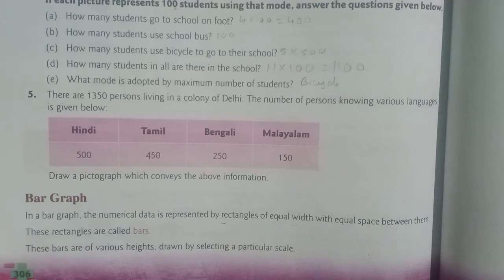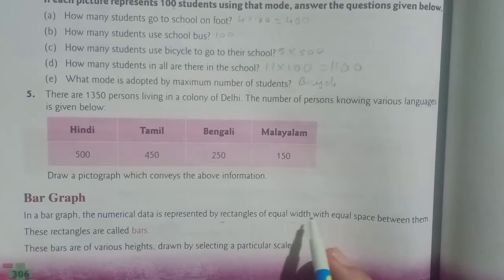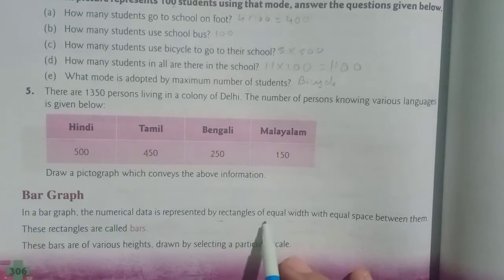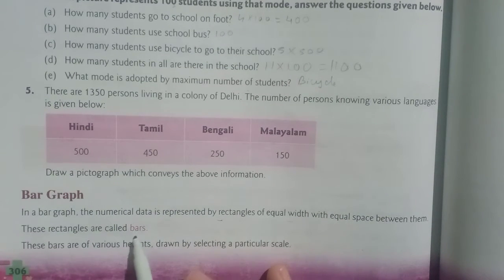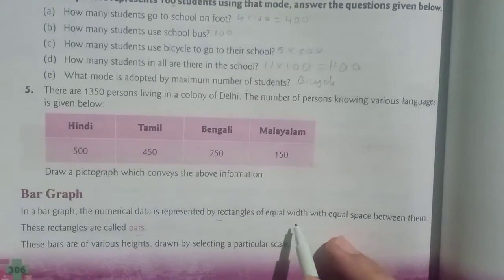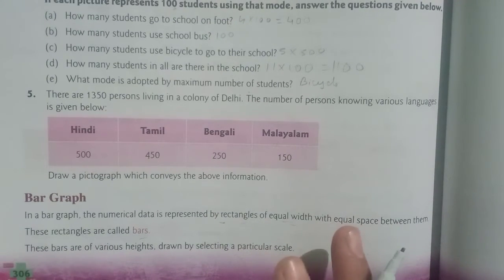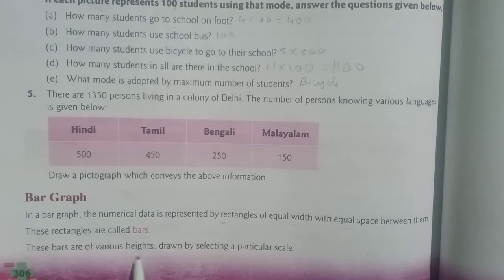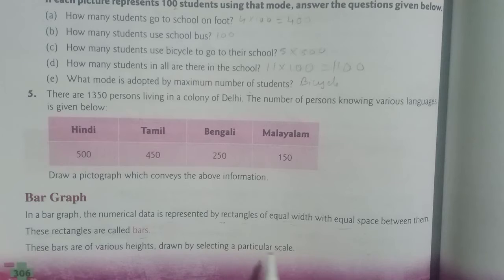As we saw in pictographs, they were represented in the form of pictures. Here we will represent it with the help of rectangles, which are also called bars, which will have equal width and equal space between them.